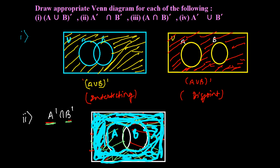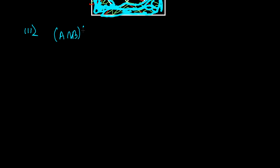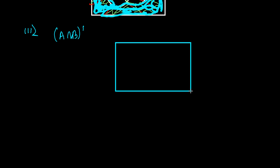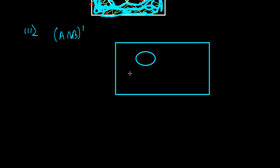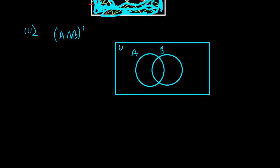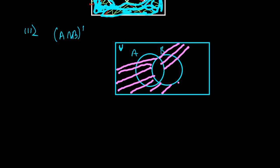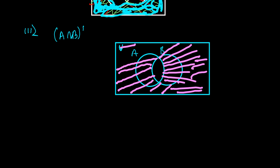Now let's go for the third one. The third one is A intersection B complement — again very easy. So for that, let's draw a rectangle and draw A and B. Suppose this is A and this is B, and this is U. A intersection B means this region. B complement means except this — so except this everything. We need to draw all this part. This all region except the combined intersection part. These all regions are going to be included. This is the Venn diagram for A intersection B complement.